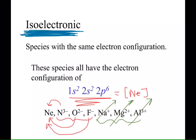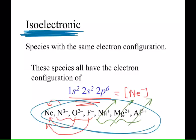In doing so, these, what are there, seven down here? These seven species all have the same electron configuration. They are what we call isoelectronic.